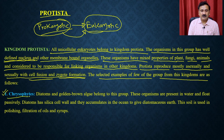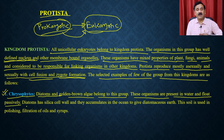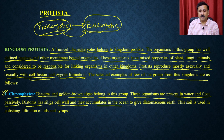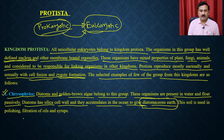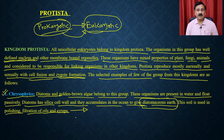Selected examples within Protista: Chrysophytes are diatoms and golden-brown algae present in water, floating passively. Diatoms have silica cell walls and accumulate in oceans to give diatomaceous earth, which is valuable industrially for making polish and filtering oil and syrups. Dinoflagellates are photosynthetic marine organisms of different colors depending on the pigments in their cell wall; they have two flagella. Red dinoflagellates multiply in oceans and give the water a red color.